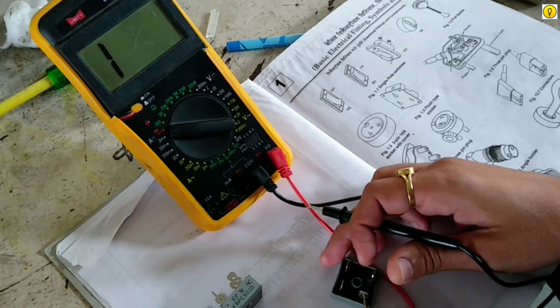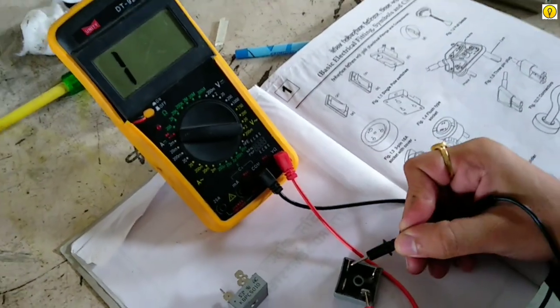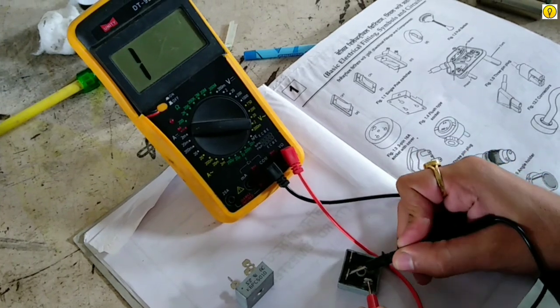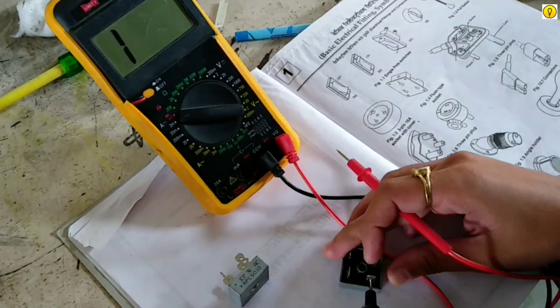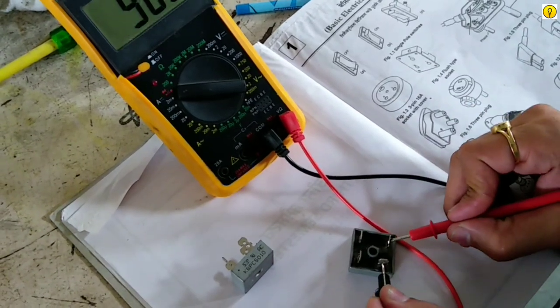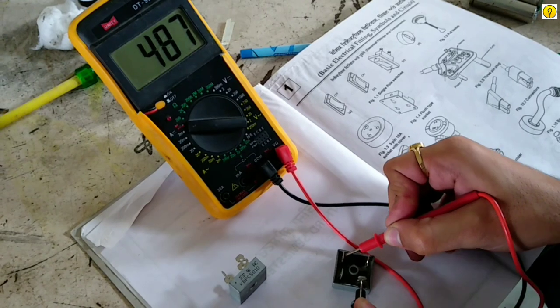So the multimeter shows nothing. Now we change the polarity. So now this rectifier shows some resistance.